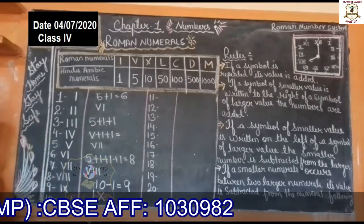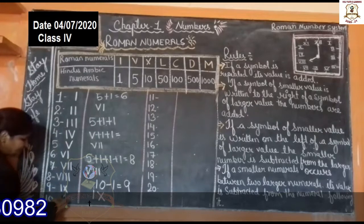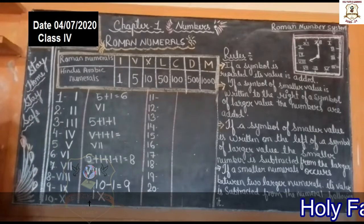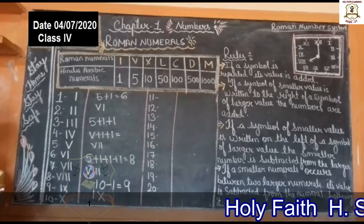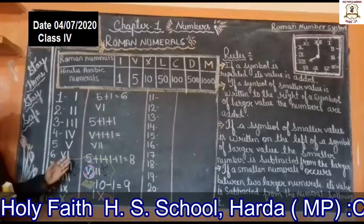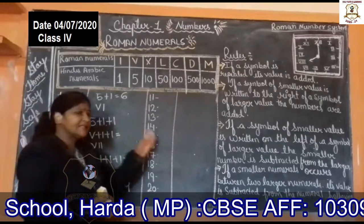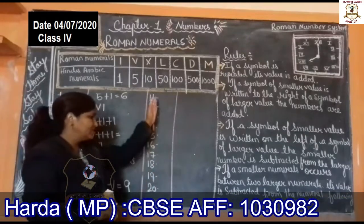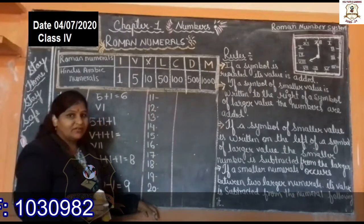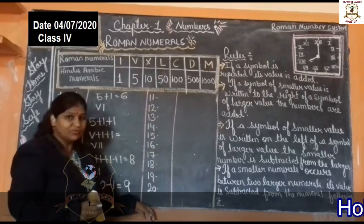Now, 10 is already given. This is 10. I hope you understood up to here. Now it is very easy to make these Roman numerals.